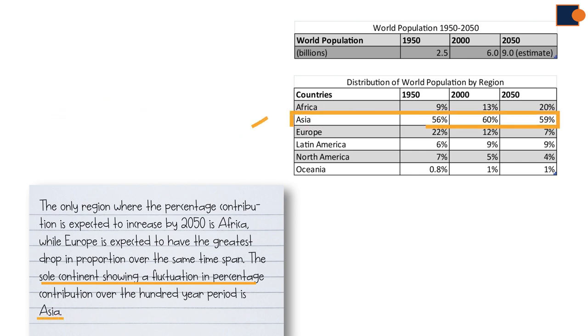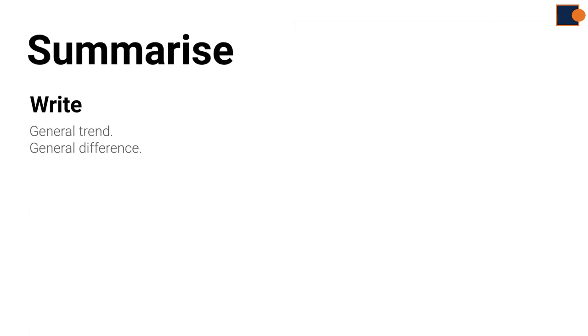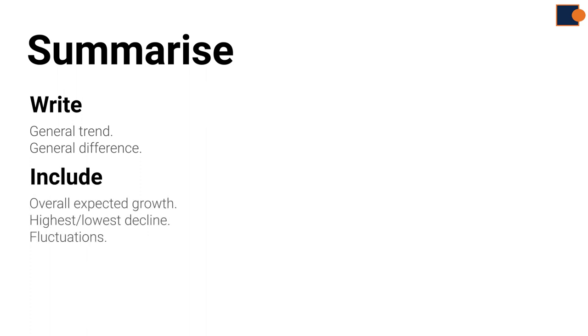To sum up for the overview part, write general and main features worth mentioning. Overall expected growth, the highest decline, and unique features like fluctuations are one example of writing an overview.